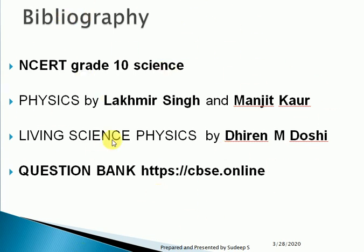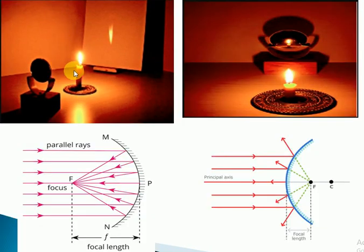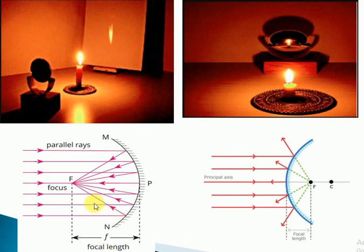The nature, position, and size of the images formed by spherical mirrors depend on the type of mirror used and the position of the object from the mirror. When an object is placed in front of a spherical mirror — concave or convex — light rays from the object fall on the mirror and get reflected. The reflected rays produce an image at the point where they intersect, in the case of a concave mirror. For a convex mirror, the reflected rays appear to intersect behind the mirror, so a convex mirror always forms a virtual image.